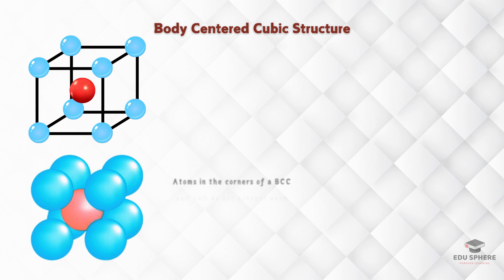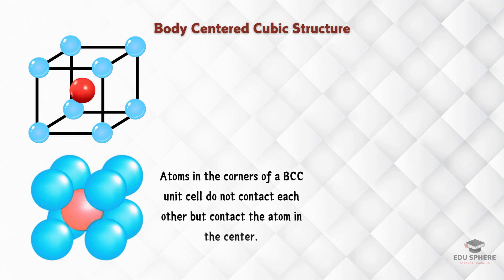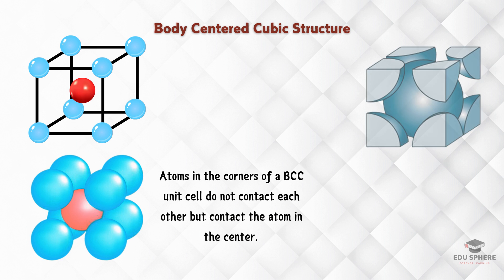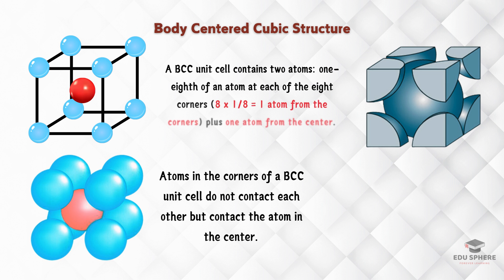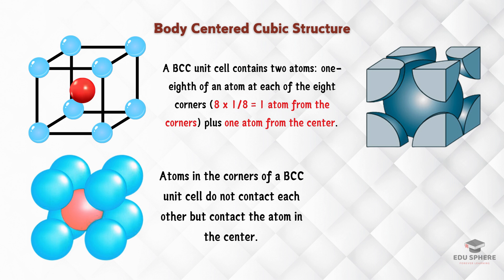Unlike the simple cubic structure, these corner atoms don't quite touch each other, but they do touch the center sphere. Because of this central atom, a body-centered cubic cell actually counts as two whole atoms. We get one atom's worth from the eight corners, one-eighth each, and then the whole atom in the center.